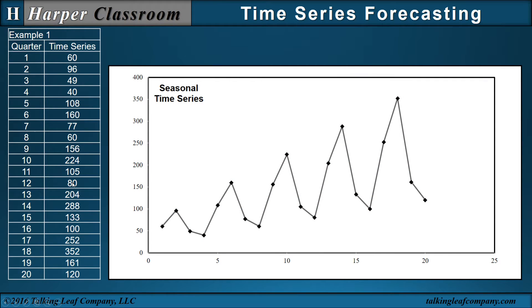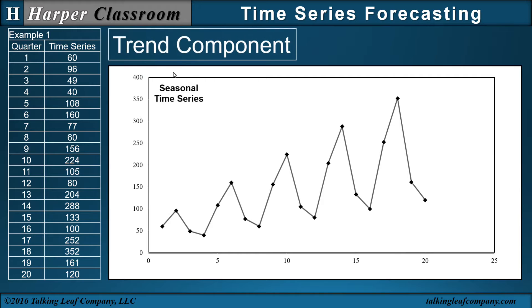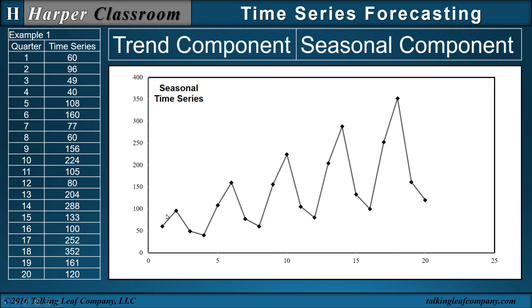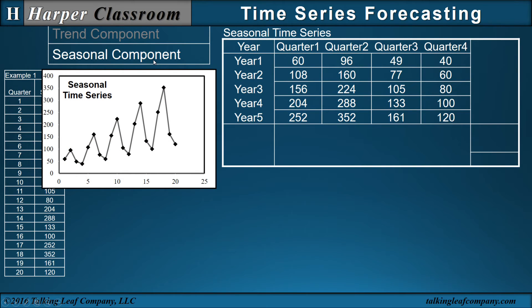Take a quarterly time series. If we plot it, we see a trend component because it's increasing, and a seasonal component because every four quarters it repeats. Because of the seasonal component, I'll block the data putting a year on every row, then line up the columns where each column represents a quarter. So the seasonal contribution throughout the year is the same for each quarter.